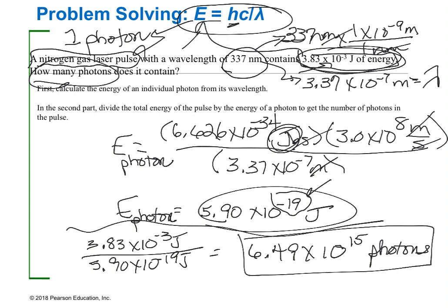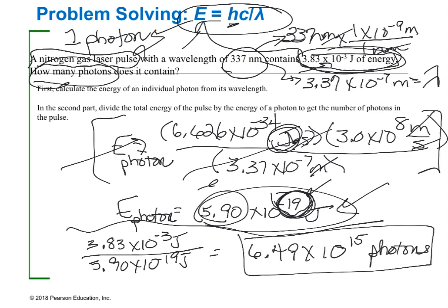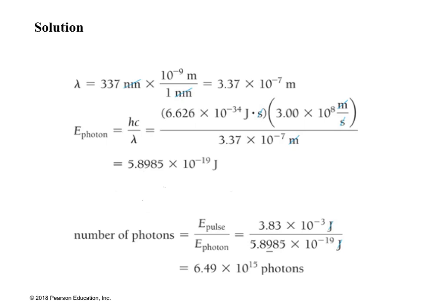This is one of the harder problems — I'd rank its difficulty close to a five out of five. Make sure you actually use the calculator you'll have on a test and plug these values in. If you get 5.90 but your exponent is not minus 19, you are entering scientific notation into your calculator incorrectly. A neatly written solution is also shown here for reference.